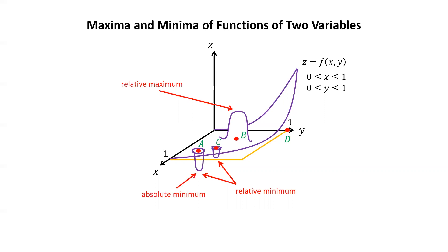Point a is also the location of an absolute minimum. Notice that the z value of point a is the lowest z value that appears on the graph. Similarly, at point d, we have an absolute maximum. The z value corresponding to point d is the largest z value on the graph.